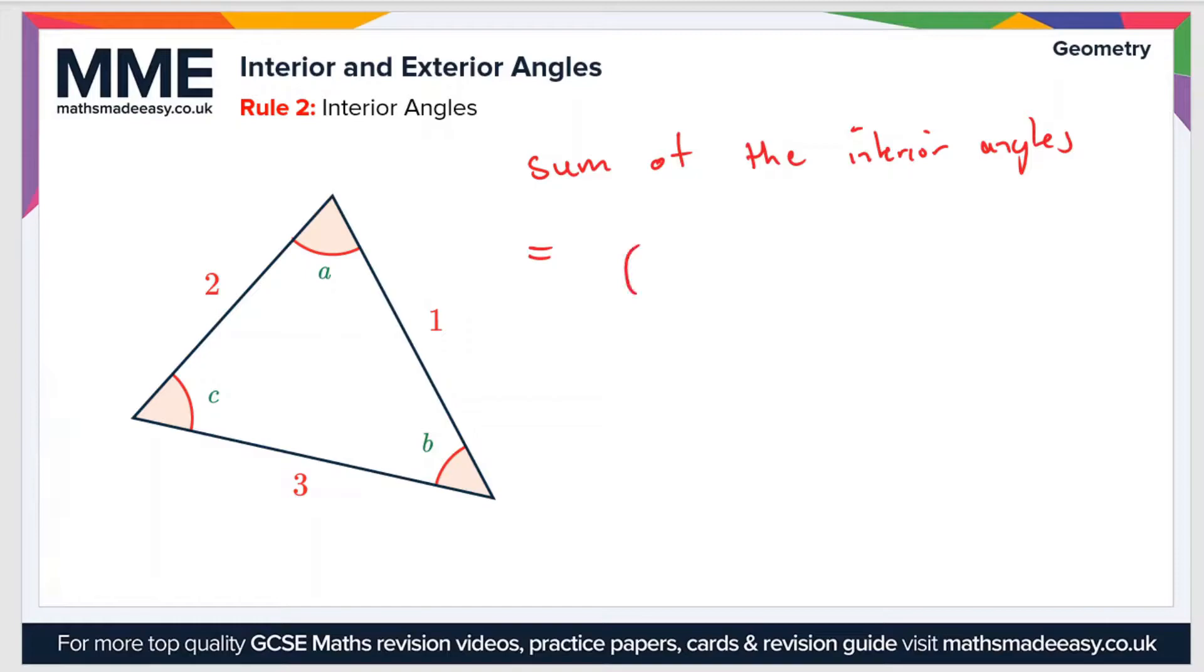So here we've got a triangle, so there are 3 sides. So the sum of the interior angles is 3 minus 2 times 180 degrees, which is just 1 times 180 degrees. So the sum of the interior angles of a triangle are 180 degrees.